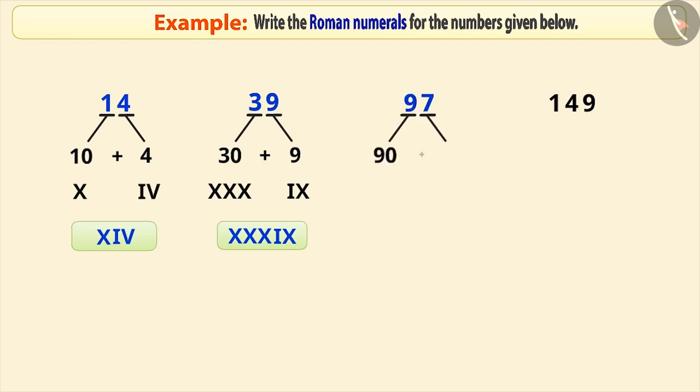97 is equal to 90 plus 7. Here, we cannot repeat the symbol of 10 more than 3 times to make 90. The right way is to subtract 10 from 100 and we express 7 like this. Writing them together, we make the Roman numeral 97.